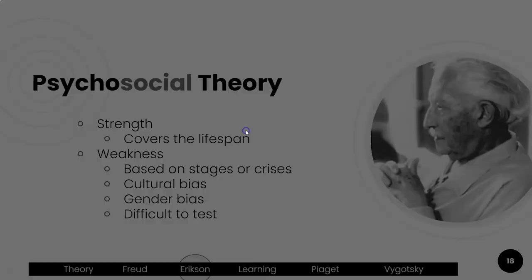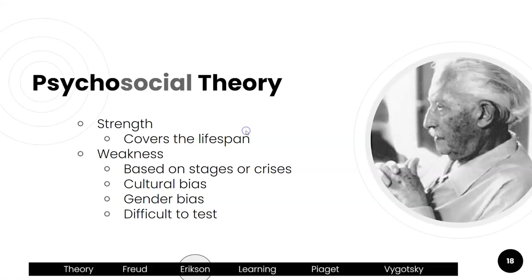There are strengths associated with this theory — the biggest is that it covers the entire lifespan. The weakness is that it is a stage or crisis type model. It is culturally biased, really addressing individuals in Western cultures. Erikson also got criticism for being more sensitive to men's development than females, so there is a gender bias. Some of his stages, particularly the younger ages, are very difficult to test and provide scientific support for.